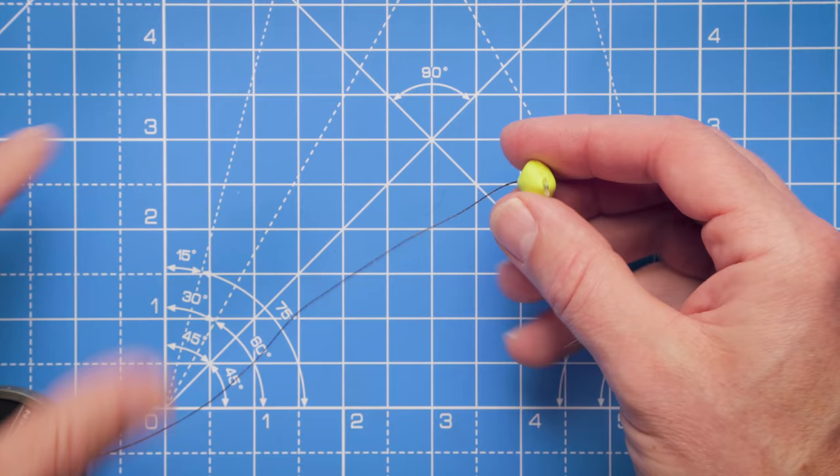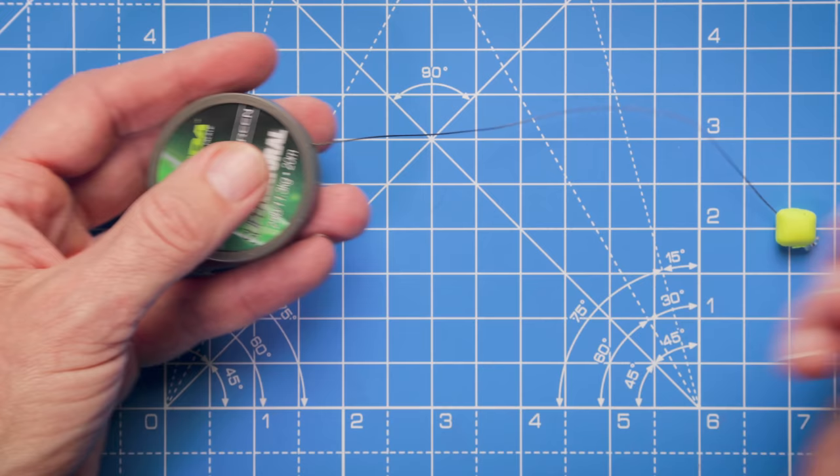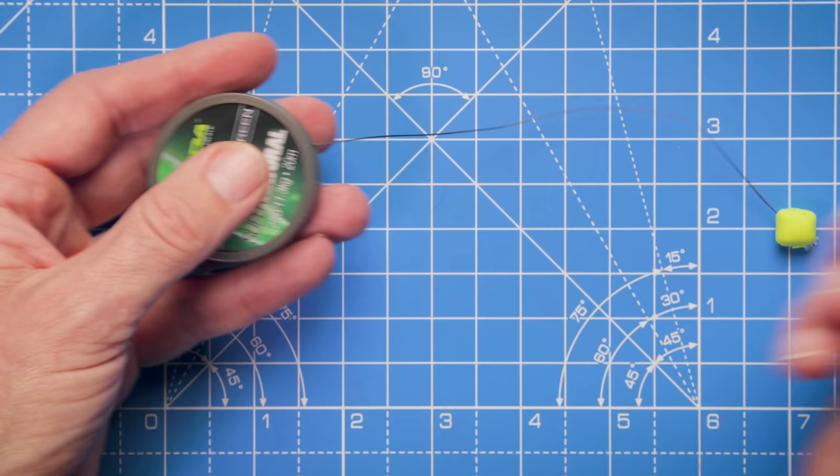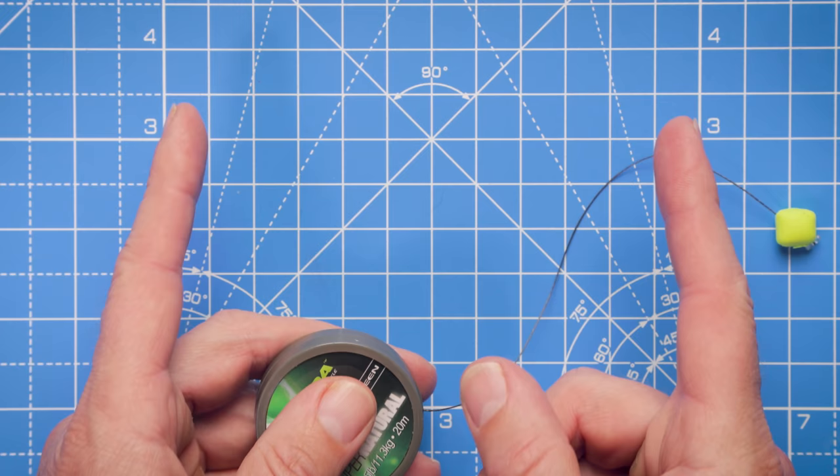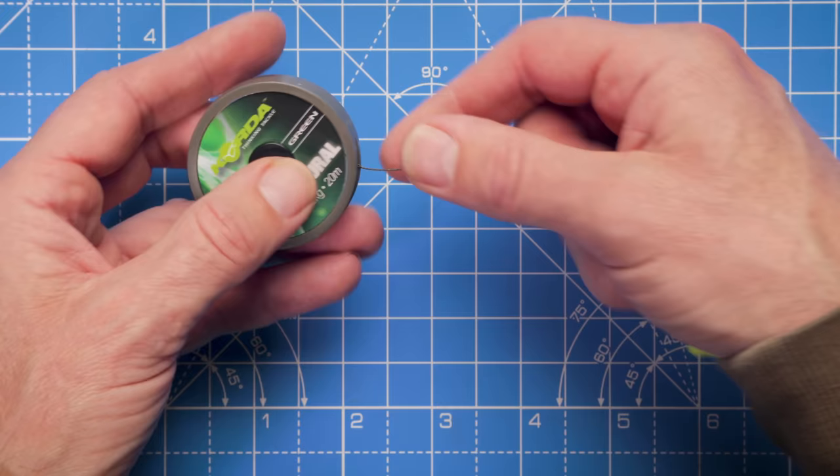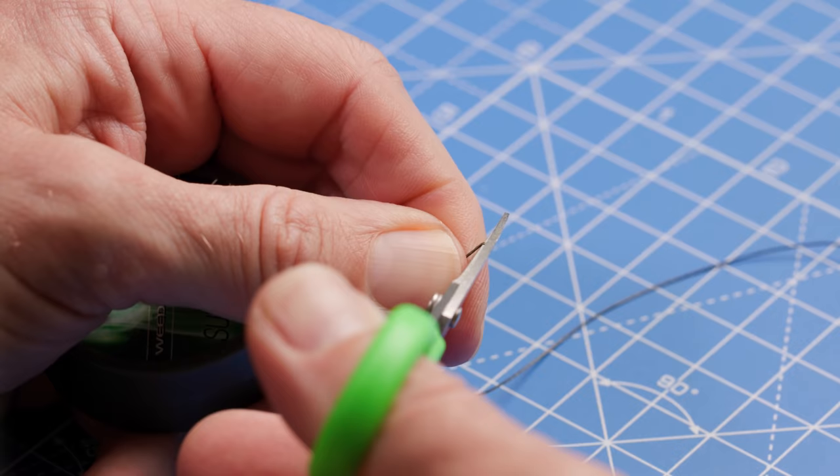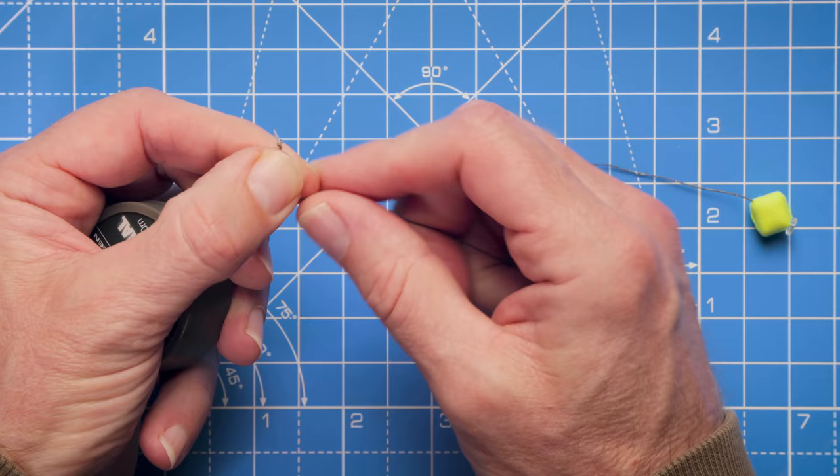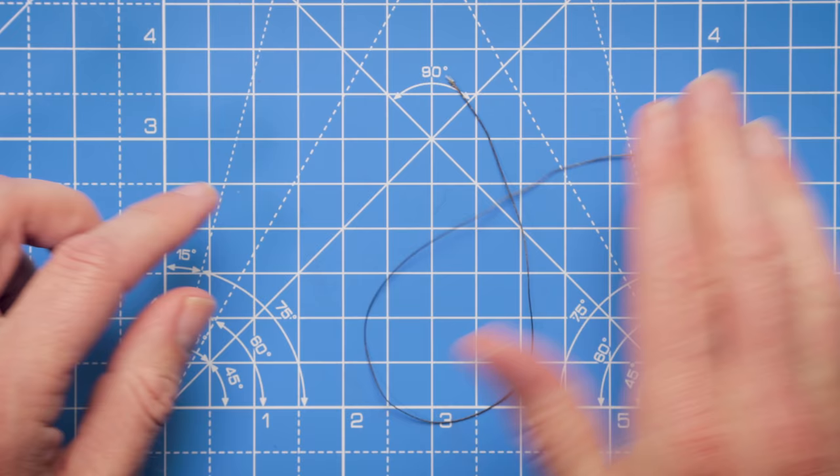We can now pull off some braid from the spool, dependent on the length of rig that we want to tie. I'm going to tie this rig to about seven, eight inches long, so it's more of a conventional rig for fishing over general fishing spots. This rig is also suitable for using within a PVA bag on a much shorter hook length, but I've pulled off probably 12 to 14 inches there so I've got plenty to work with.